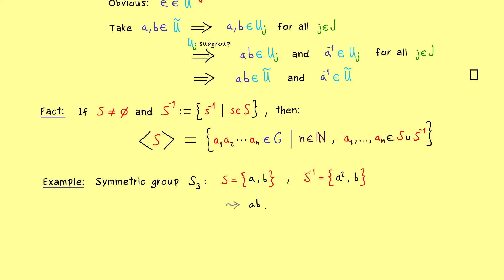Okay and now we can just form all possible combinations, for example AB, BA and so on. And then we immediately see that BB gives us the identity element. And now you know, if you remember the last video, that we can do more combinations, but we don't get more elements back.